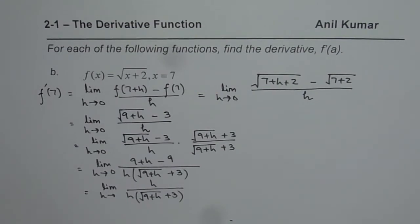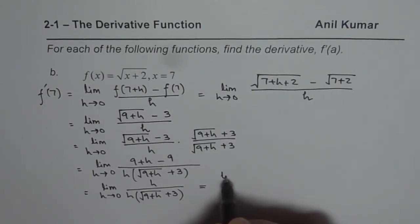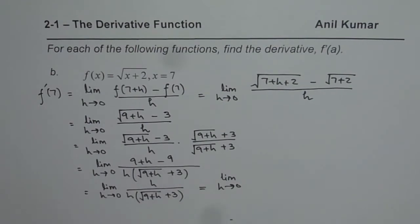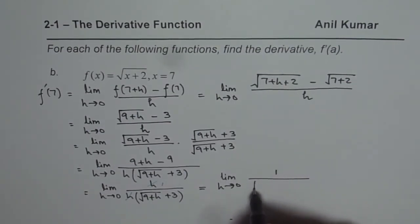Now let's continue with this. So that equals limit h approaches 0. So I will cancel h and h. So I get 1 here. So I could write this as 1 over square root of 9 plus h plus 3.